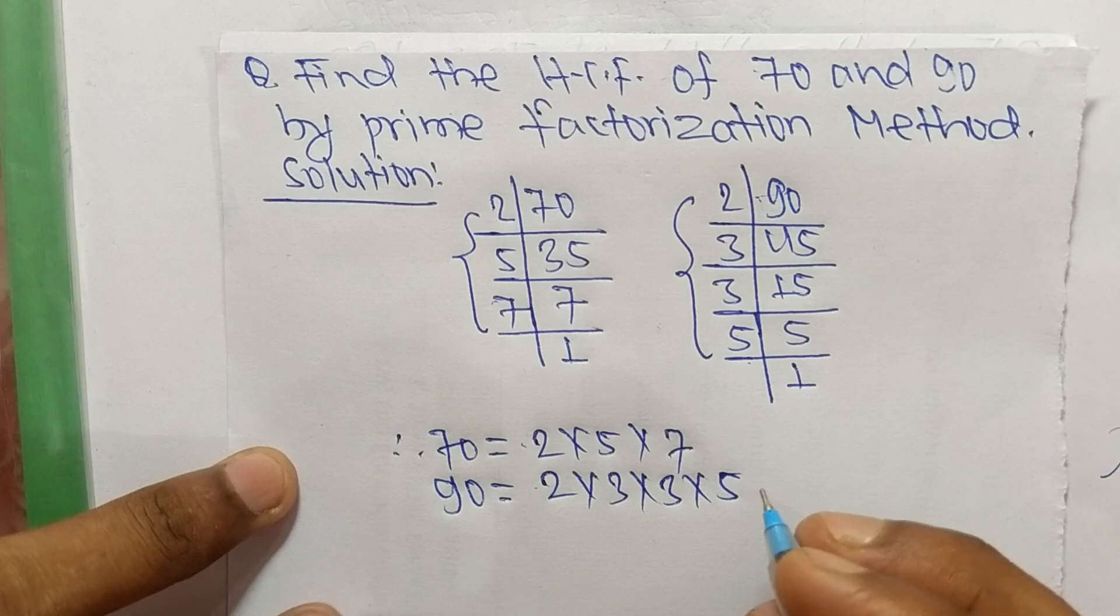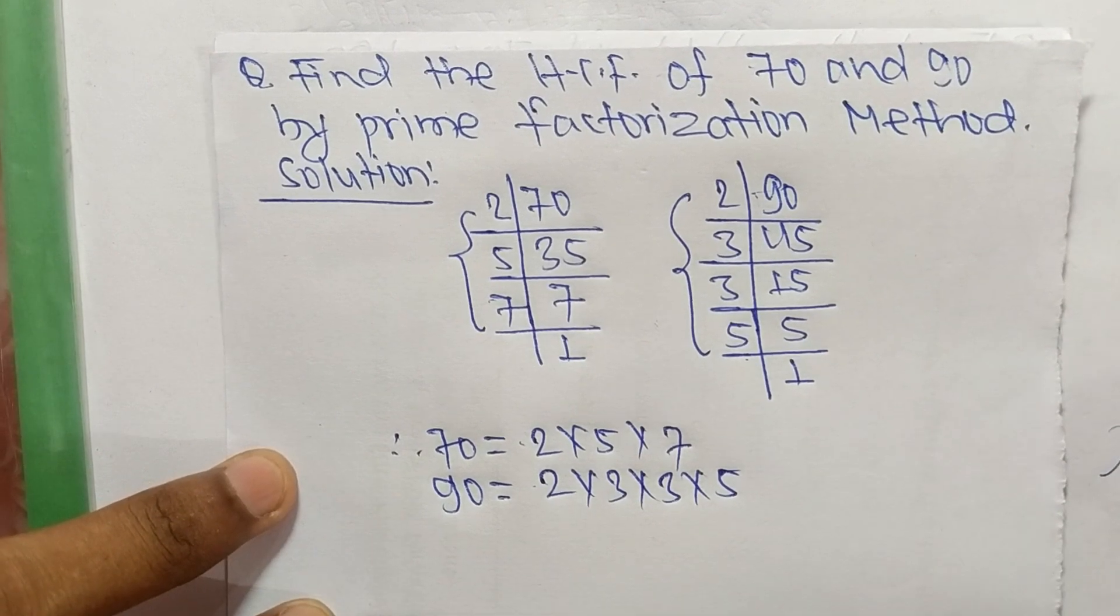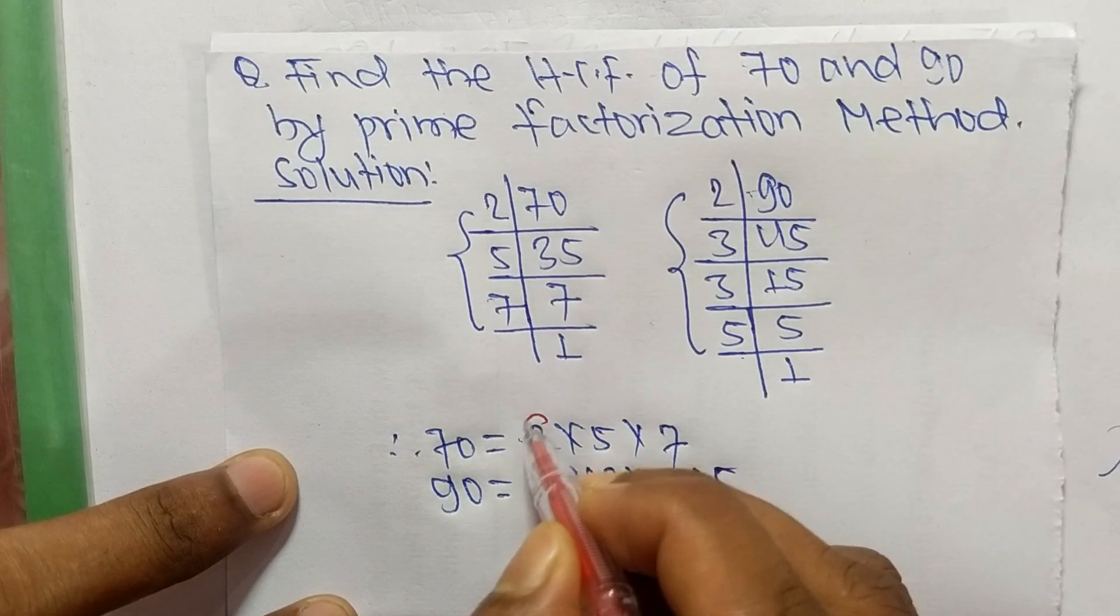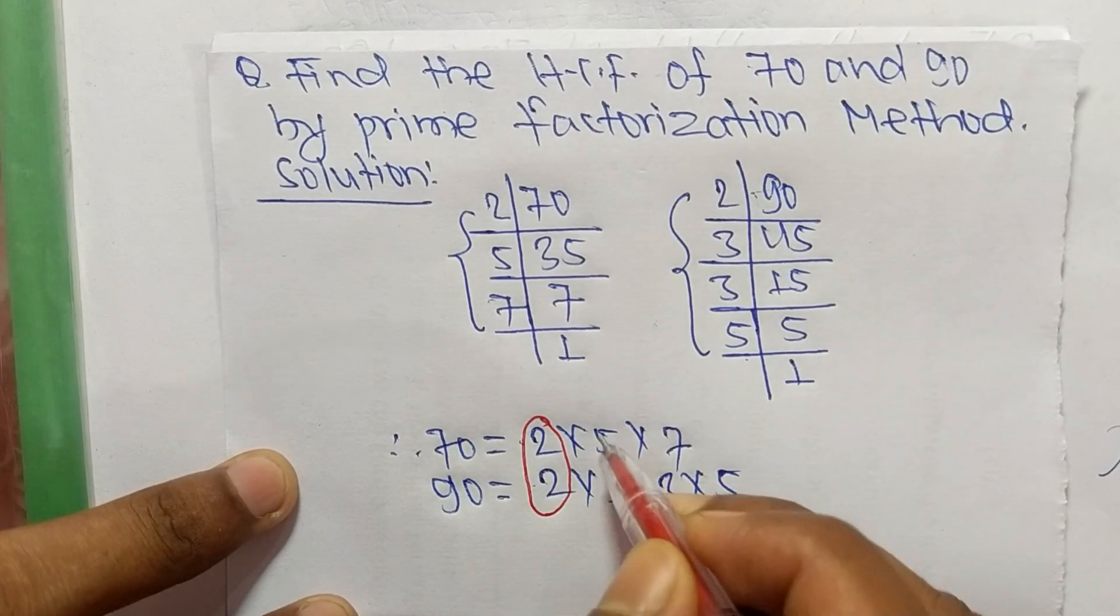So now we select the common factors in this prime factorization. The common factors here are 2, and the second common factor is 5.